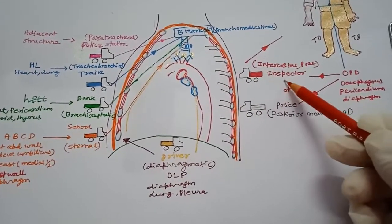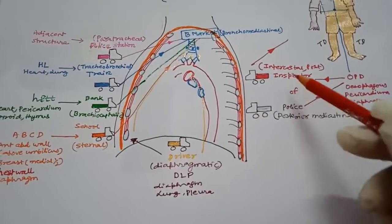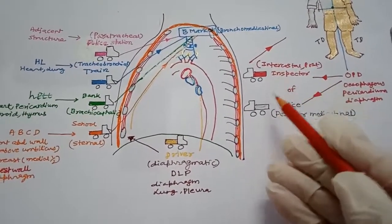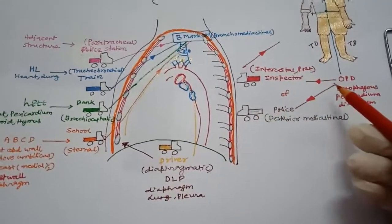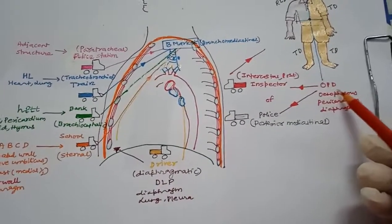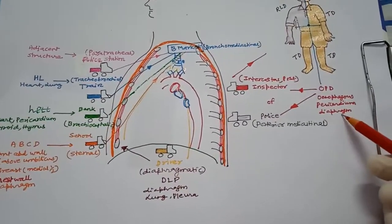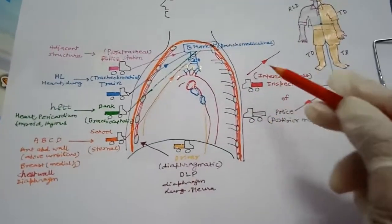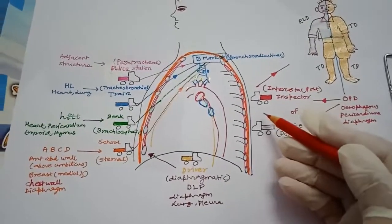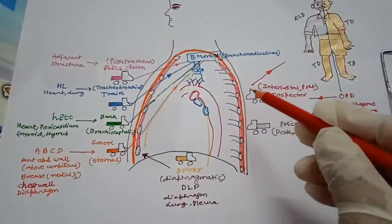The posterior row comprises two groups: the posterior intercostal and the posterior mediastinal. The posterior intercostal collects garbage from the inspector of police. The posterior mediastinal, represented by the OPD of a hospital, collects lymph from the oesophagus, pericardium, and diaphragm.